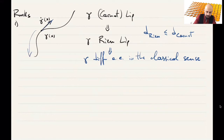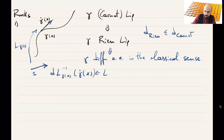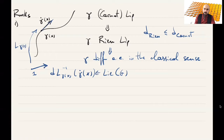Now I bring it back via the translation by γ(t) to the origin, to the identity. This gives the vector dL_{γ(x)⁻¹} applied to γ̇(x). This is an element of the Lie algebra of G, which defines a one-parameter subgroup. Another remark: having the existence of the intrinsic differential is a stronger property than having Euclidean differentiability. We saw that Euclidean differentiability is free from the standard Rademacher theorem.